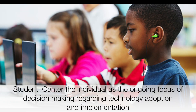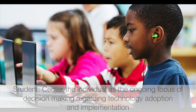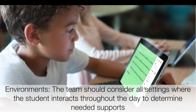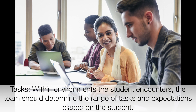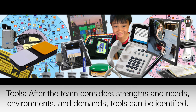The S in SET stands for Student, meaning centering the individual as the ongoing focus of decision-making regarding technology adoption and implementation. The E in SET stands for Environments — the key is for the team to consider all of the settings where the student interacts throughout the day to determine needed supports. The first T in SET stands for Tasks; within environments the student encounters, the team should determine the range of tasks and expectations placed on the student, which will help illuminate areas of strength and need, as well as student preferences. The second T in SET stands for Tools. After the team considers the student's strengths and needs, the environments where they live and learn, and the demands of those environments, needed tools can be identified, including AT and Accessible IT.